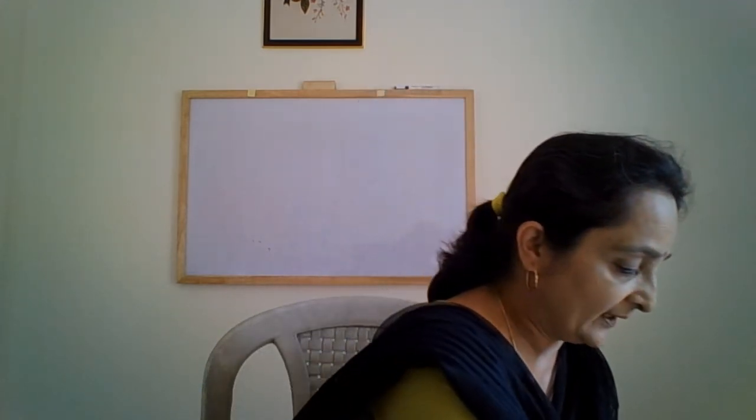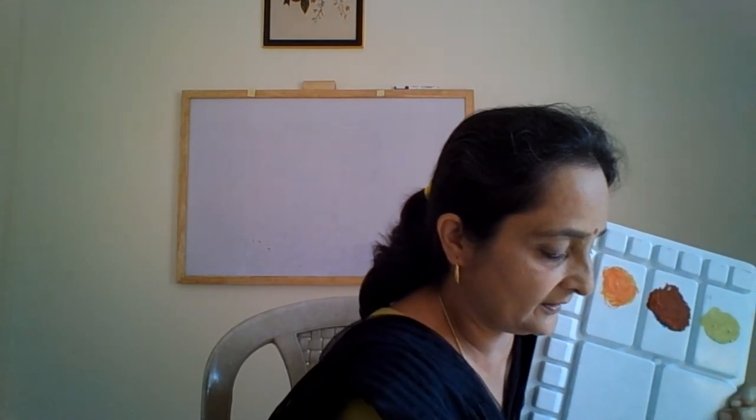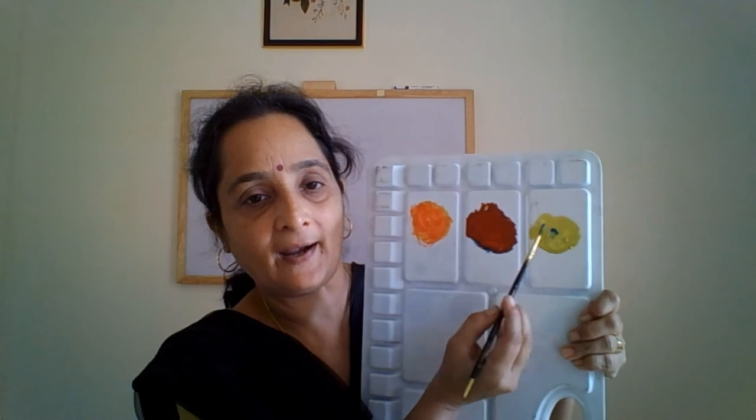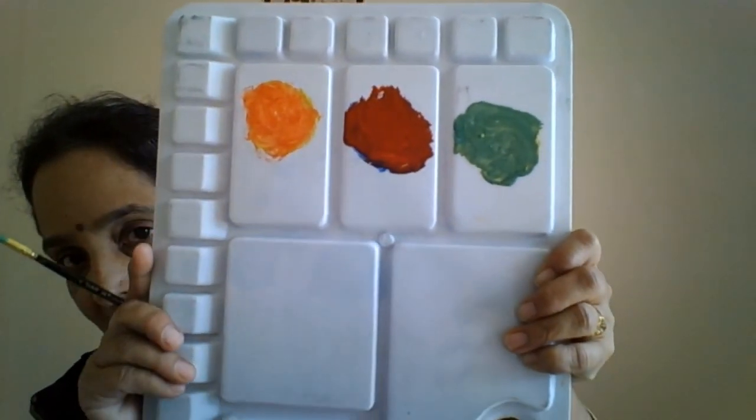Now let's see the third secondary color. We are going to mix yellow and blue. First we will take yellow color. Next we will mix the color blue. I have taken a dot of blue color and I am going to mix it. It is more of a green color — light green.